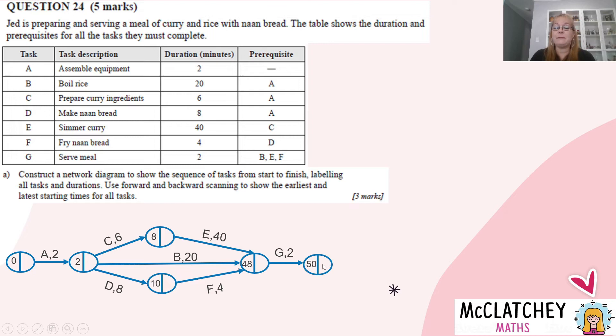Then in this last part of the bubble, we start at 50. And we're now going to backwards scan through the network. We've done the forward scanning, now it's backwards scanning time. So going back 50 take away two gives us 48. So we'll come across here, 48 take away 40 gives us eight. And then 48 take away four gives us 44.